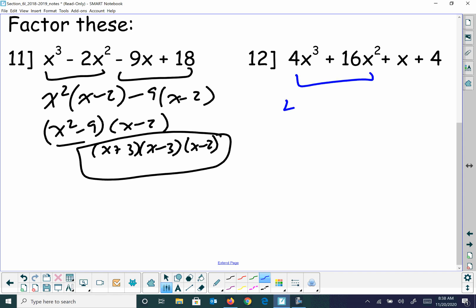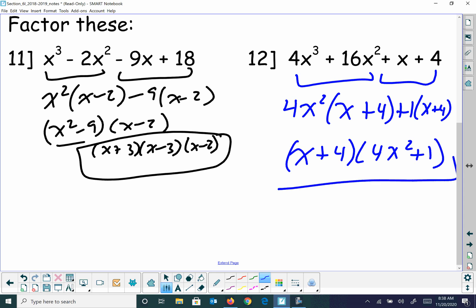Okay, again, let's take a look. I'm going to factor out a 4x squared. That leaves me x plus 4. There's nothing to factor out here, so I'm going to leave it as a 1. And I wind up with x plus 4 times 4x squared plus 1. The second part is the sum of 2 squared, so it will not factor.